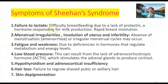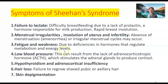Symptoms of Sheehan syndrome: failure to lactate because of lack of prolactin — milk secretion is not initiated. Difficulty breastfeeding and breast involution. Menstrual irregularities, uterine involution, and infertility are common. Amenorrhea or irregular menstrual cycles may occur. Fatigue and weakness result from hormone deficiencies that regulate metabolism and energy levels. Low blood pressure can result from lack of adrenocorticotropic hormone, which stimulates the adrenal gland to produce cortisol. Hypothyroidism and adrenocortical insufficiency also accompany the other symptoms.